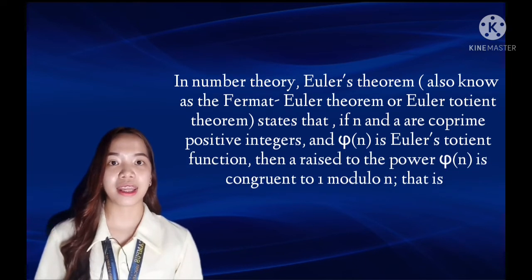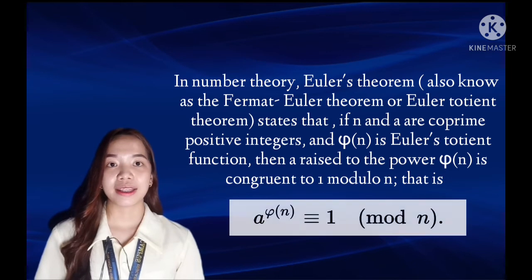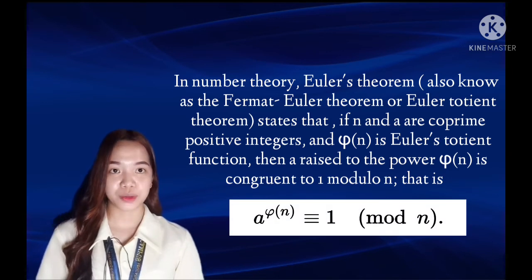It states that if n and a are coprime positive integers and φ(n) is Euler's Totient function, then a raised to the power φ(n) is congruent to 1, modulo n. That is the formula that we will use.